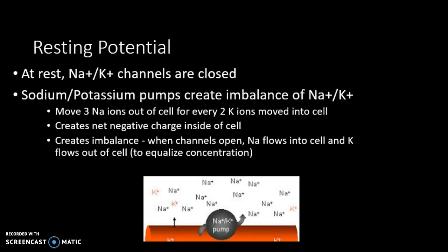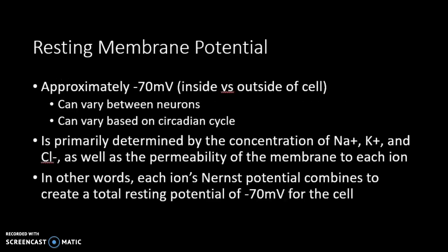At rest, sodium-potassium channels are closed. The sodium-potassium pump creates an imbalance by moving three Na⁺ ions out of the cell for every two K⁺ ions moved in, creating a negative charge inside the cell. When channels open, sodium flows in and potassium moves out to equalize concentration. Resting membrane potential is approximately negative 70 millivolts, can vary between neurons, and can vary based on circadian cycles.